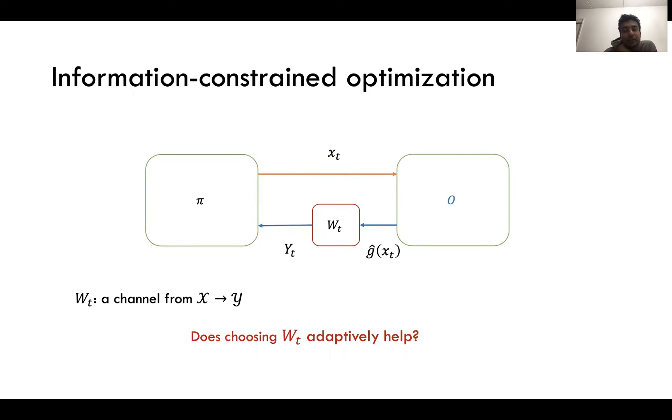So this can be pictorially shown here where in each round the gradient estimate ĝ passes through a channel W_t which denotes your information constraints and you only get to see the output y_t of these channels. The question we want to ask is does adaptively choosing these channels or gradient coding schemes help?